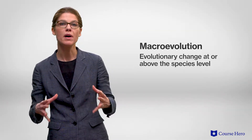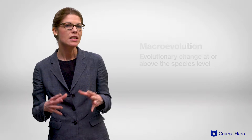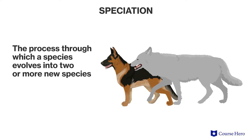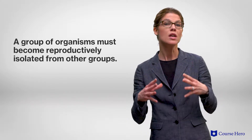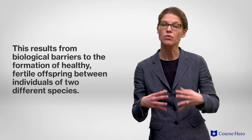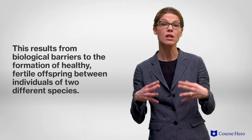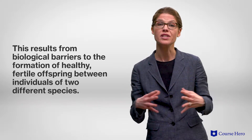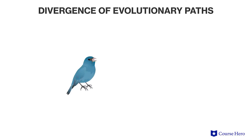Macroevolution is evolution at or above the level of a species. The starting point of macroevolution is speciation, the process through which a species evolves into two or more new species. In order for a new species to form, a group of organisms must become reproductively isolated from other groups, and this reproductive isolation results from biological barriers to the formation of healthy, fertile offspring between individuals of two different species. By limiting the mixing of genes by individuals moving between two populations, their evolutionary paths diverge.